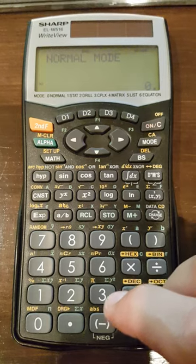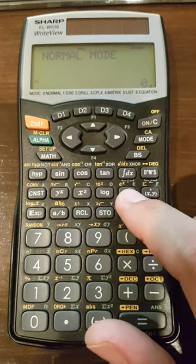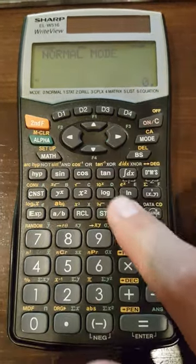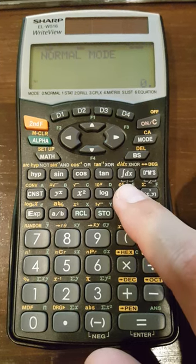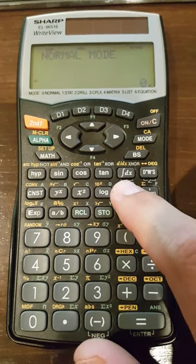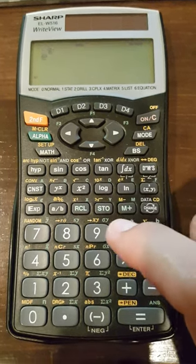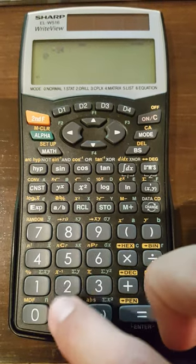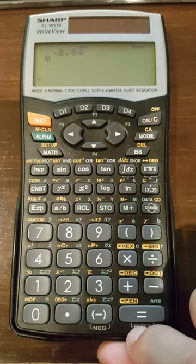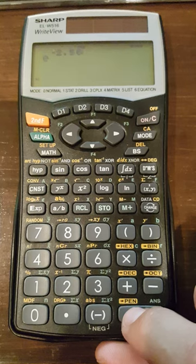Okay, and so if you want to know E to any power, you could use the E to the X button. So I'll hit second, E to the X, because on this calculator it's in orange so I use my second button, and if I want to know E to the negative 2.56 power, I could just type that in as my exponent and hit equals. And there we go.